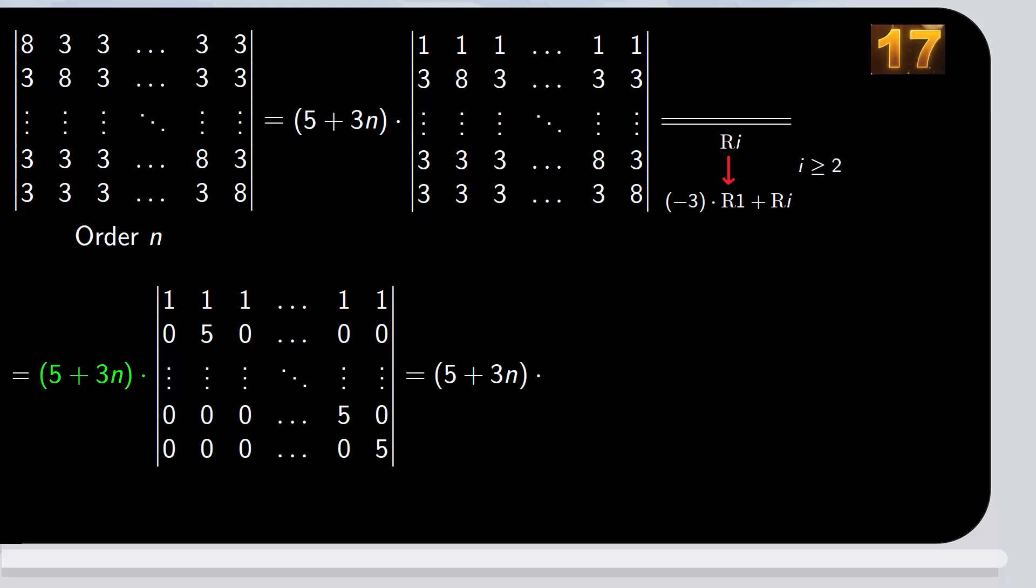We're left with (5 + 3n) times the determinant of an upper triangular matrix. Its value is the product of the elements of the main diagonal, which is clearly 5 to the (n-1). And this is the result of the determinant.